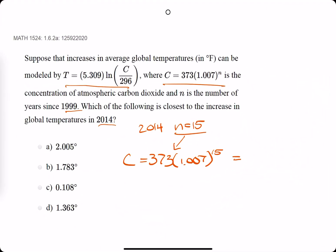Not too shabby. We get C is 414.14. We plug this value into our T function to find the increase in temperature.